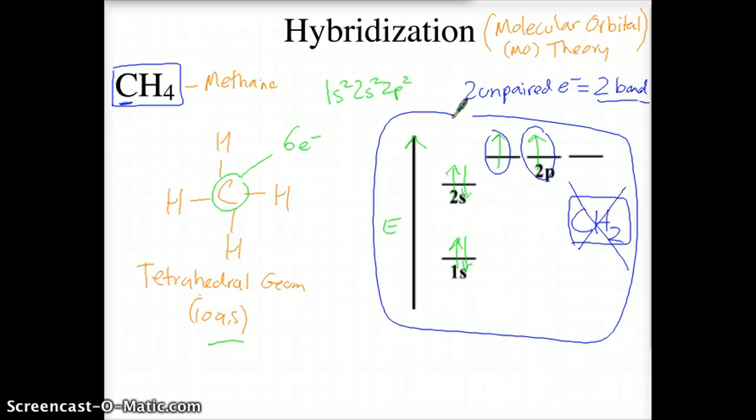So, something must be going on with the atomic orbitals here that allows this atom of carbon to form four bonds. What is that thing that is going on? Well, that thing is this theory of hybridization, and the formation of hybrid orbitals.